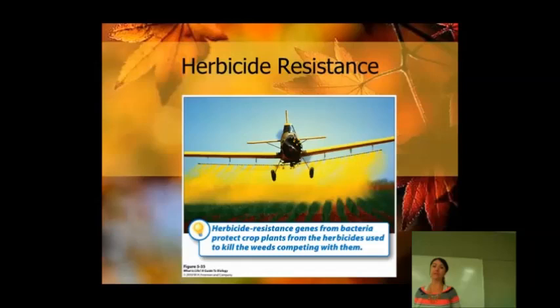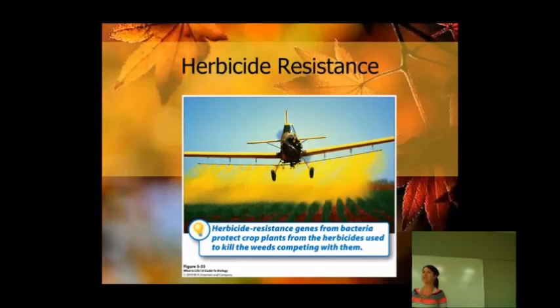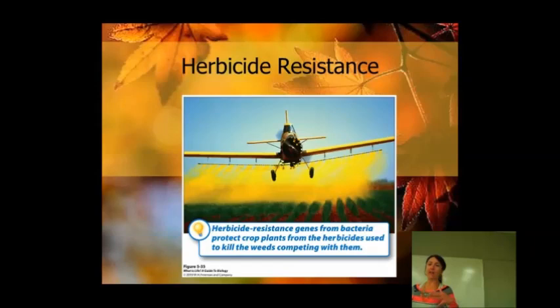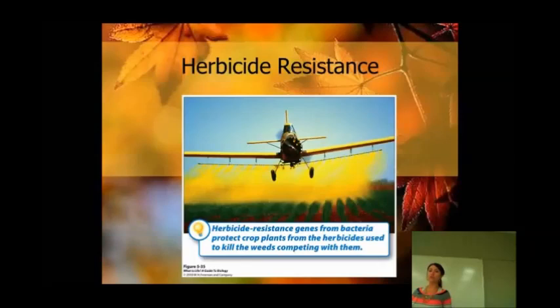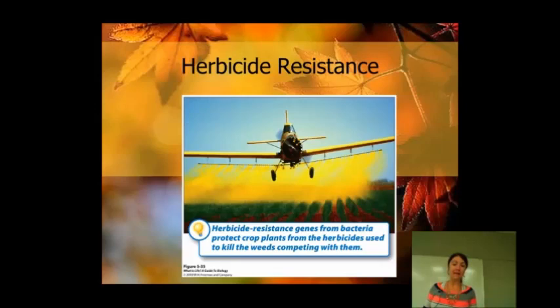Another thing we have is herbicide resistance. If you've ever read about Monsanto or other big companies producing these seeds along with Roundup — the herbicide sprayed on top of the crops — the herbicide kills off weeds so that we're only putting our water and work into the crops we want. But if we kill off weeds with herbicide, or produce the herbicide inside the plant itself, then we're eating the plant that has the herbicide in it. It seems safe, but you can never really be sure in the long run.